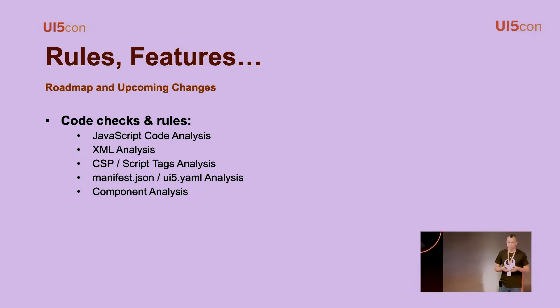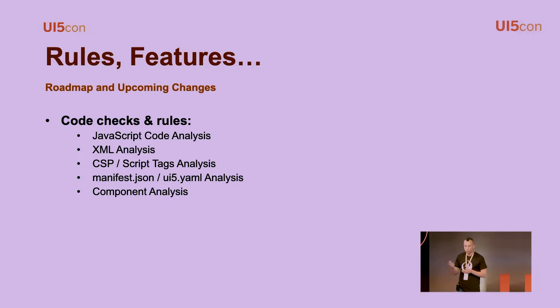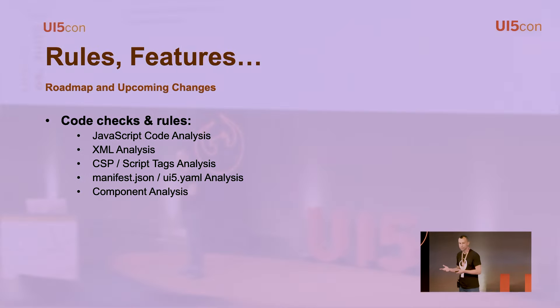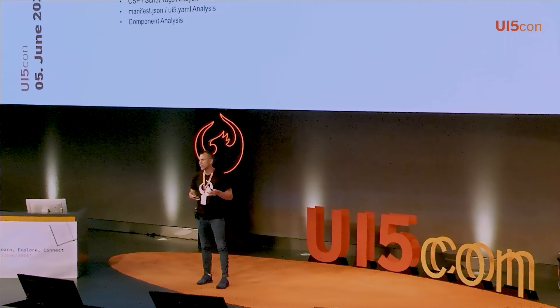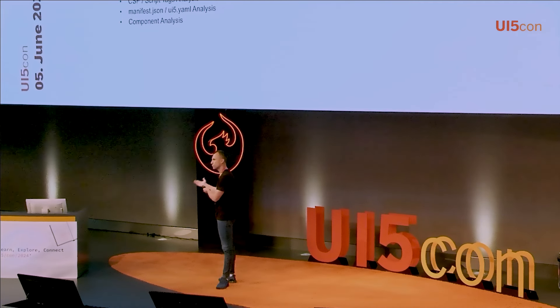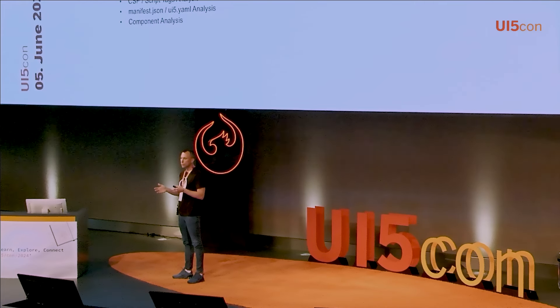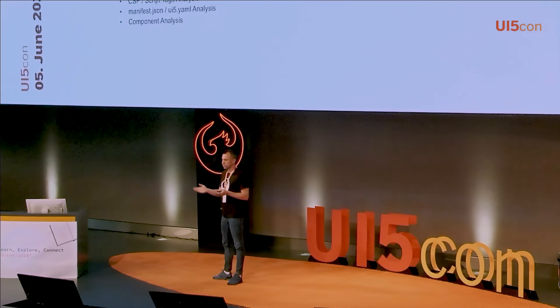What can it detect? The main purpose of the linter was to check JavaScript code. It finds whether you're using deprecated libraries, deprecated code, as well as what we call partial deprecations — for example, if you have a control with a deprecated property, we can detect this in the definition. We also analyze XML views and partials the same way. Behind the scenes, we transpile XML views into valid JavaScript code and the flow is the same.